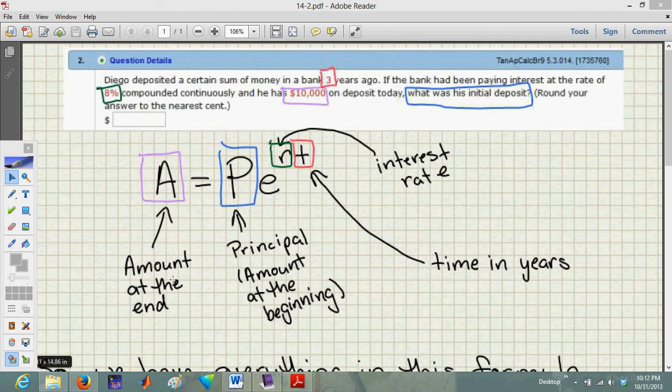So where do we find these pieces in our question? I used colored squares to highlight where each variable is in the formula and in the word problem. We've got amount at the end, this A here. They're saying that he's got $10,000 on deposit today. You might read that and think that's what we're starting with because today is now. But this isn't the initial amount we start with - they're saying he deposited something three years ago, and this is the amount he's ended up with today.